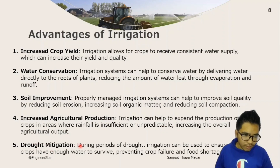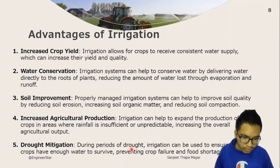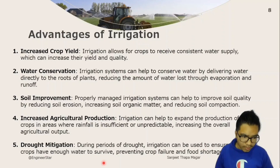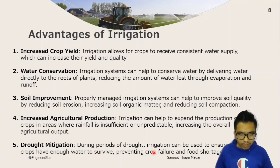Drought mitigation is another advantage. During periods of drought, irrigation can be used to ensure that crops have enough water to survive and to prevent crop failure and food shortages.